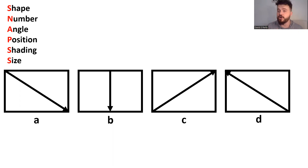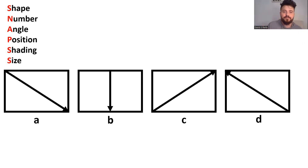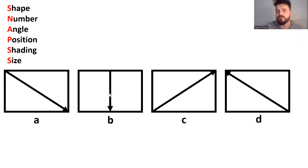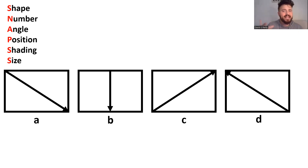Position is about where the objects are — the rectangle is always on the outside and the arrow always goes from one end to another. Angle and position relate closely here. Moving to shading: there's nothing to distinguish them — each has a white rectangle with a black arrow. Size: the rectangles are all the same, the arrows appear the same size, though b might be shorter because it goes top to bottom rather than corner to corner.